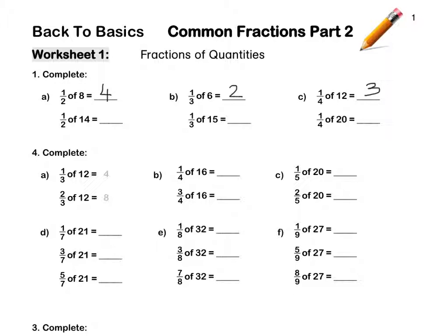Question 2. One third of 12 is 4. Therefore, two thirds of 12 is 8. Twelve divided into 3 equal parts is 4, and 4 times 2 is 8.